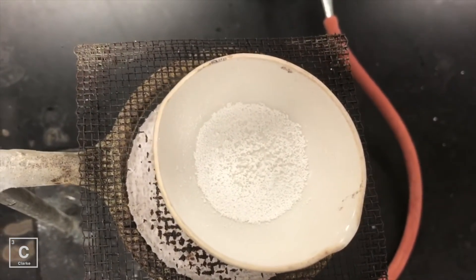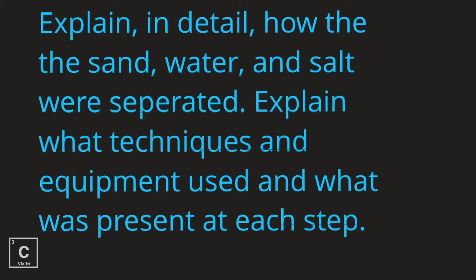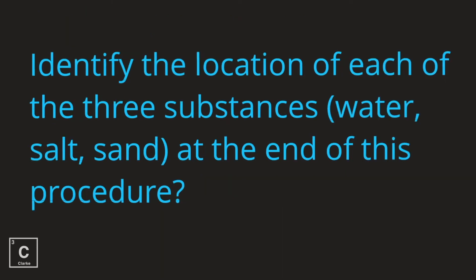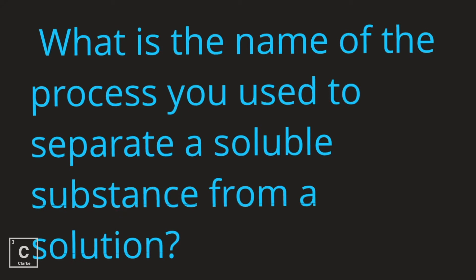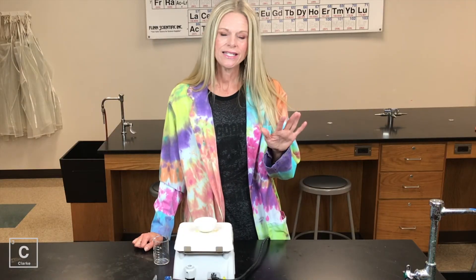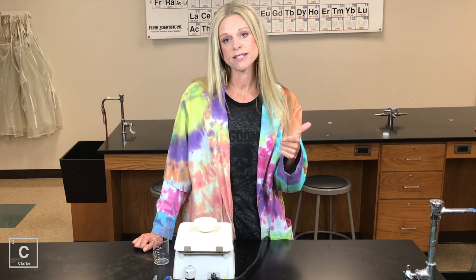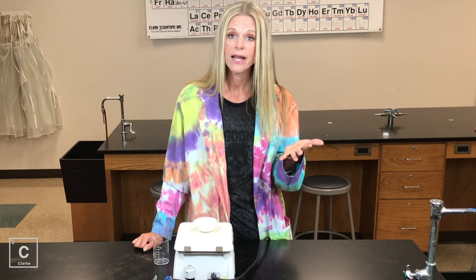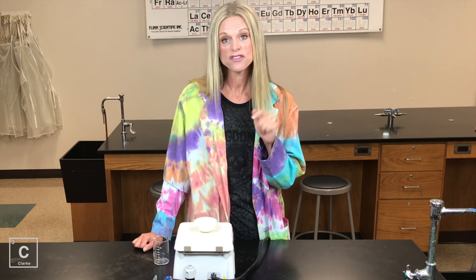After all of your liquid has evaporated, this is what's left. Explain in detail how the sand, water, and salt were separated — explain what techniques and what equipment were used and what was present at each step. Make sure to identify the location of each of the three substances — the water, salt, and sand — at the end of this procedure. What is the name of the process you use to separate a soluble substance from a solution? Evaporation. Sometimes you use a hot plate, sometimes you use a Bunsen burner — it really just depends on what you're trying to evaporate. Sometimes a Bunsen burner is not safe, so we would need to use a hot plate.